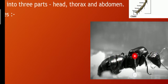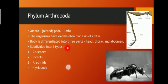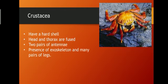The thorax region contains legs and wings. The abdomen region contains reproductive organs. Phylum Arthropoda is subdivided into four classes: Crustacea, Insecta, Arachnida, and Myriapoda. Let us go through these classes.